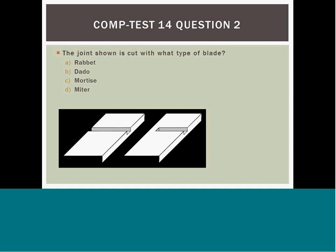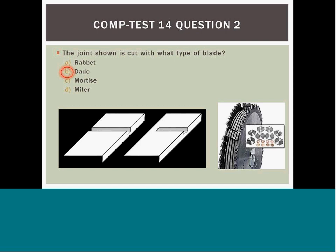Question 14: A dado is cut with what type of blade? A) standard blade, B) metal blade, C) steel blade, or D) dado blade. Answer B — a dado is cut with a dado blade, as shown on the slide. Note that blades can be added or removed to make the dado as wide as needed.